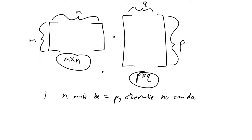So an M by N matrix times a P by Q matrix — here are the two rules you have to memorize. One: N must be equal to P. Otherwise, stop — we can't even do this. Just like for matrix-vector multiplication, where the width of the matrix had to equal the number of elements of the vector, the number of columns of the first matrix has to be equal to the number of rows of the second matrix.